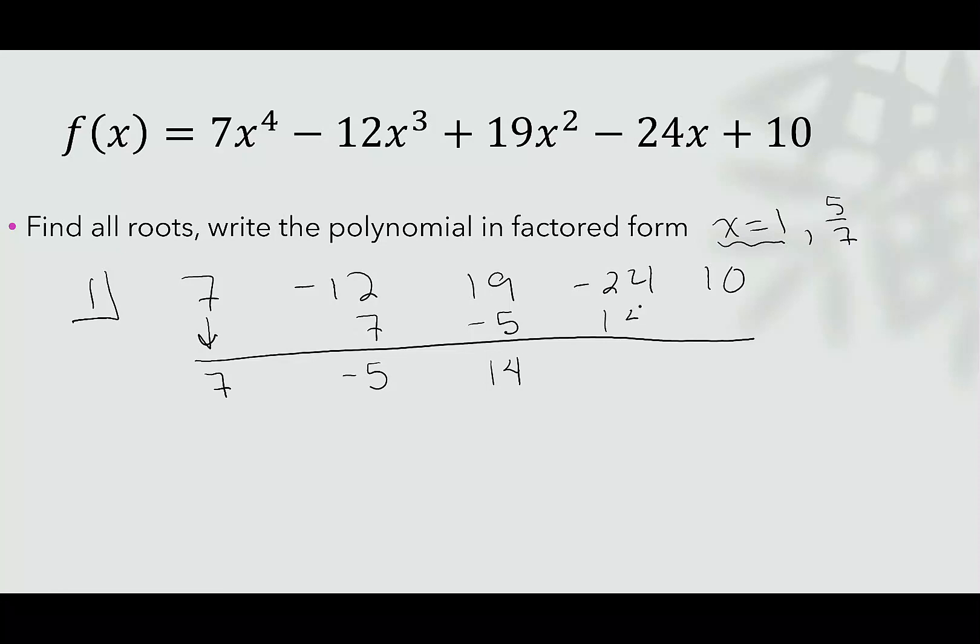1 × 14 is 14. I add -24 and 14. I get -10. Then 1 × -10 is -10. This gives me 0. Our process replicated dividing by x - 1.